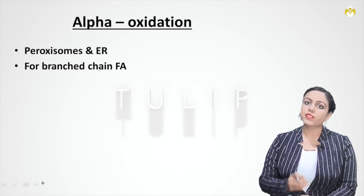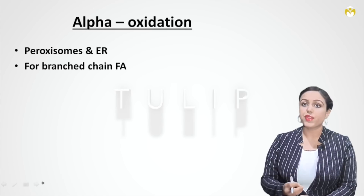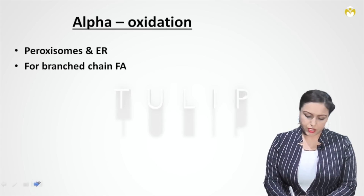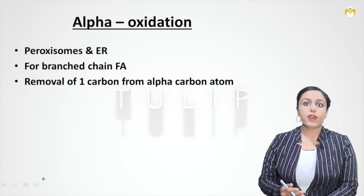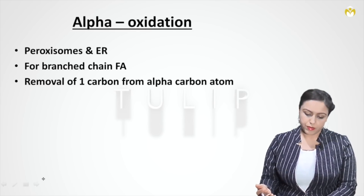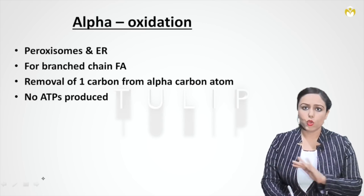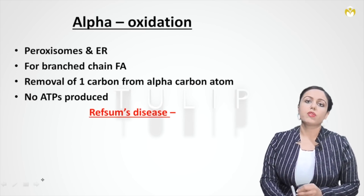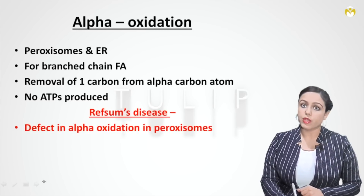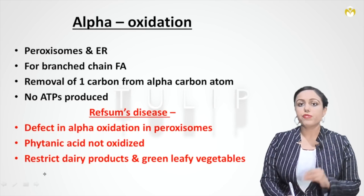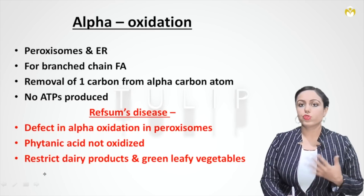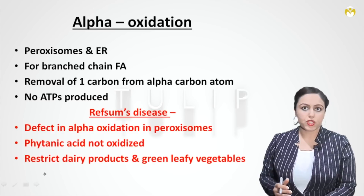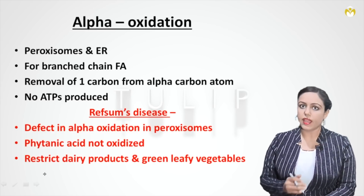Alpha oxidation occurs for branched chain fatty acids, for example phytanic acid, which is present in dairy products and green leafy vegetables. In this pathway, one carbon is removed from the alpha carbon atom and no ATP is produced. Refsum's disease occurs because of a defect in alpha oxidation in peroxisomes — phytanic acid is not broken down, it accumulates, so in these patients we have to restrict dairy products and green leafy vegetables.